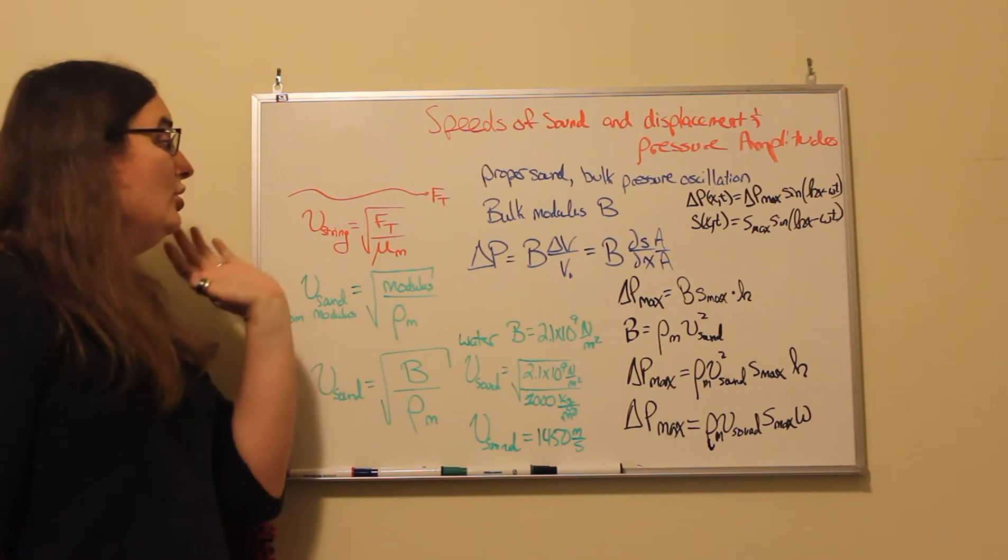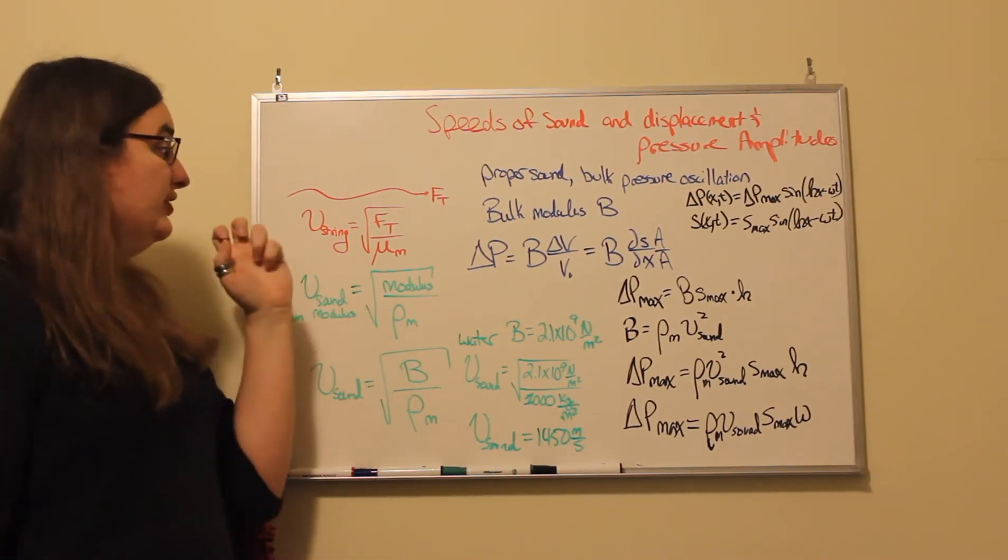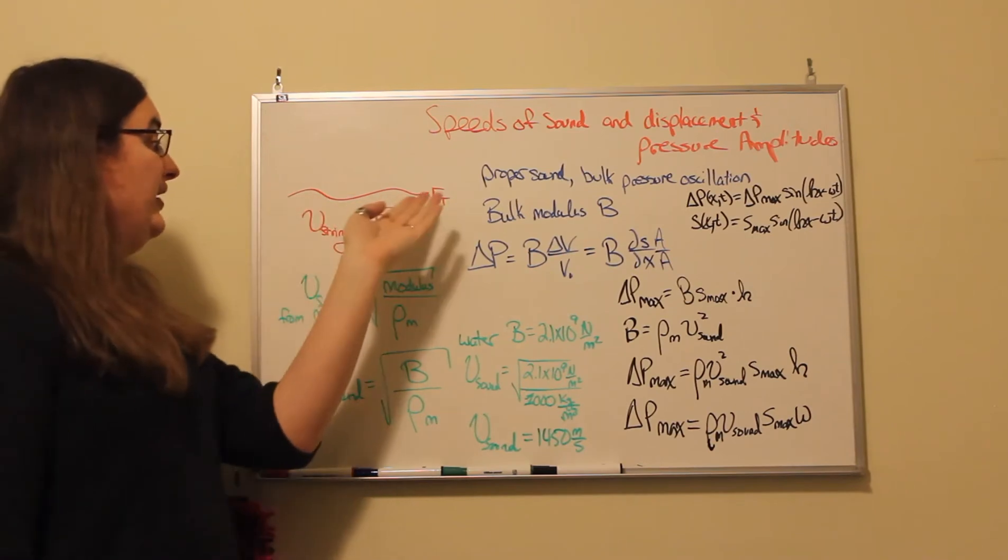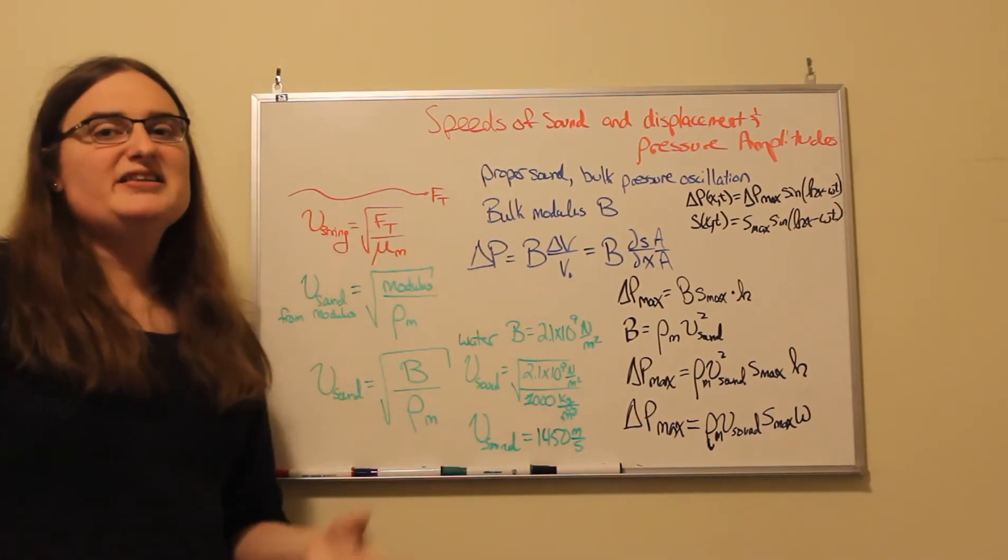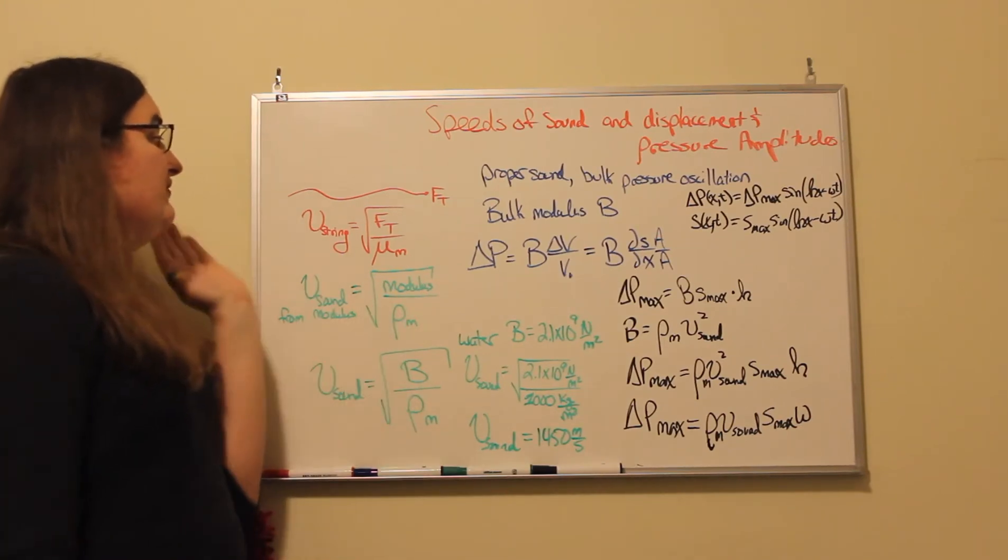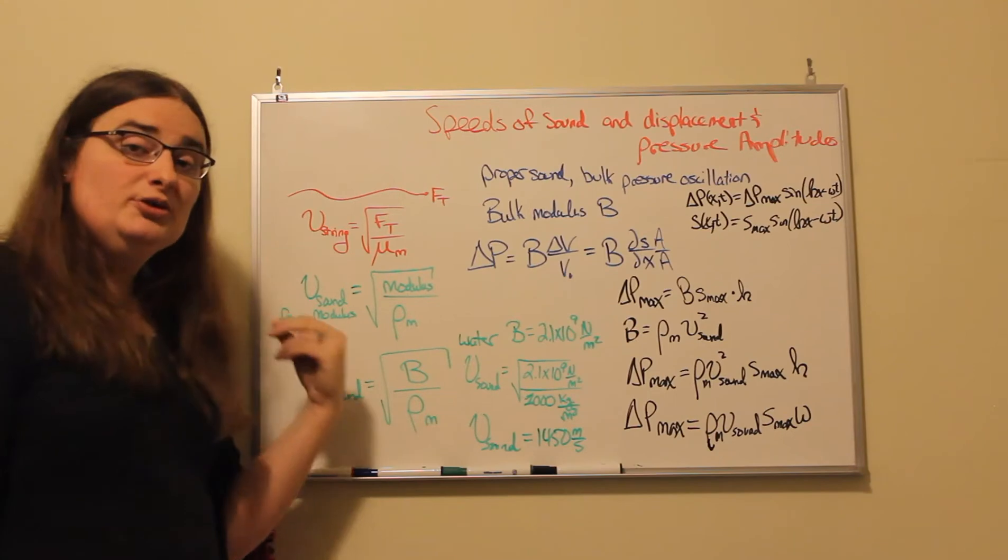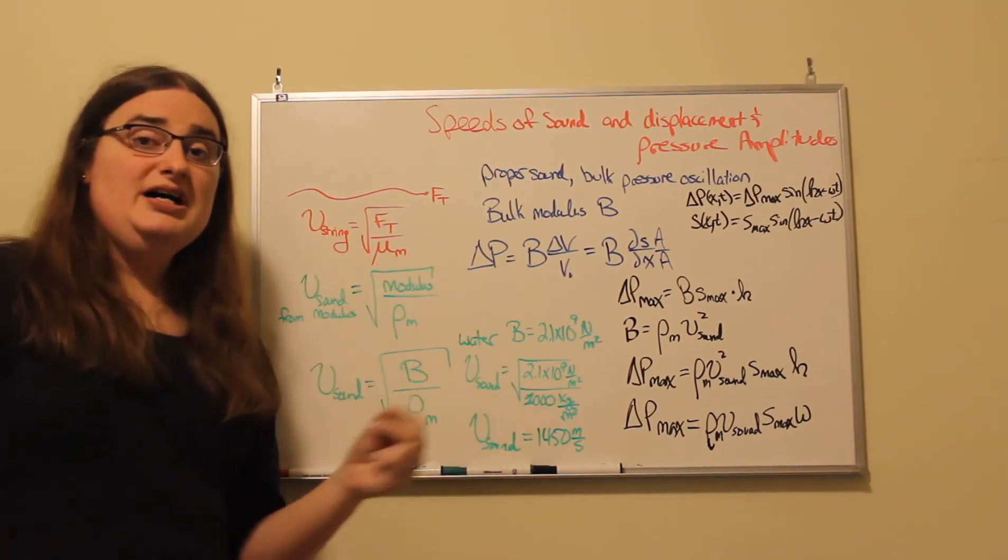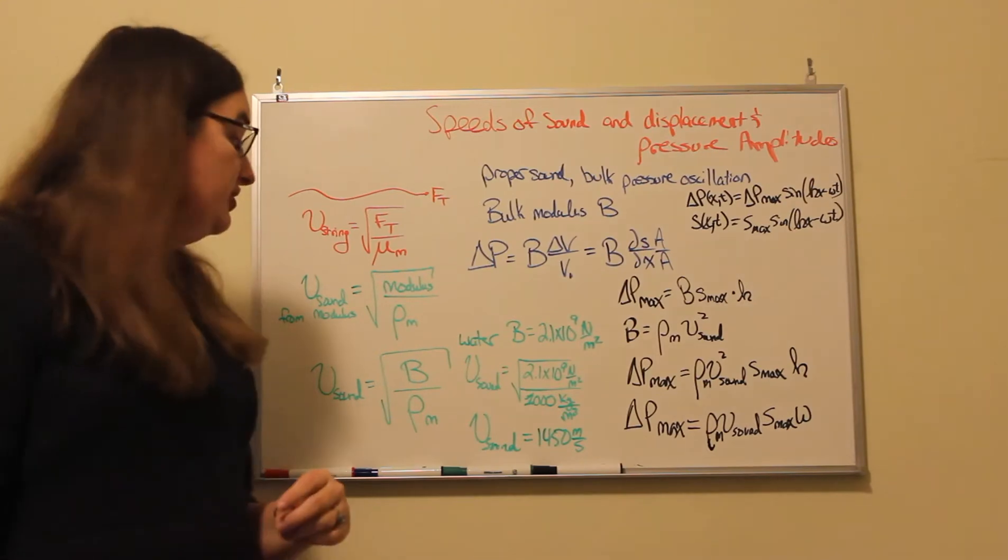It's similar to how Newton's laws give us the speed of a wave on a string, where we have a forcing element related to the tension in the string divided by an inertial element, the linear mass density. The forcing element here is our modulus, and the density is our inertial element.